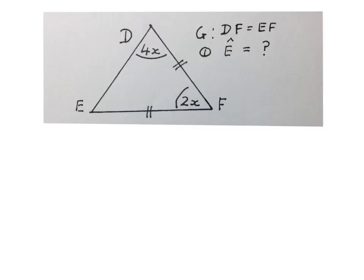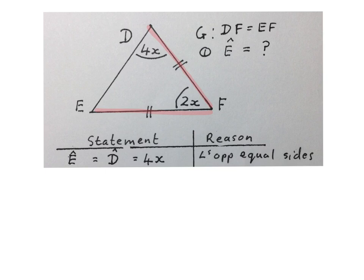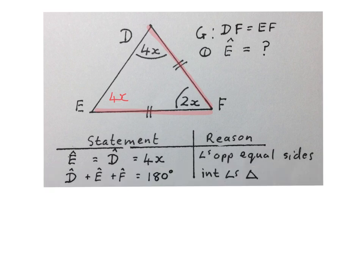The next question looks like this. They give us triangle DEF and tell us that line DF is equal to line EF, indicated by double tick marks on those sides. They ask us to calculate the size of angle E. Firstly, we may write: angle E equals angle D, and let's call it 4X. The reason is: angles opposite equal sides. Look at the video on angles opposite equal sides of a triangle. So we fill in 4X at angle E.